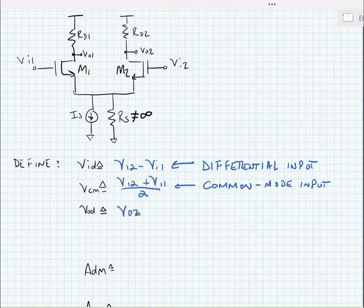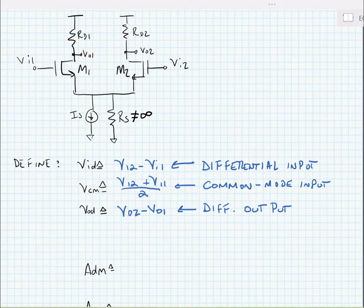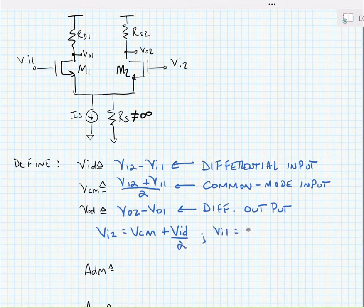We also will typically have a differential output, VO2 minus VO1. We can define our inputs and outputs in terms of the common mode voltage and differential voltage. For instance, VI2 is equal to VCM plus VID over 2, and VI1 is equal to VCM minus VID over 2.